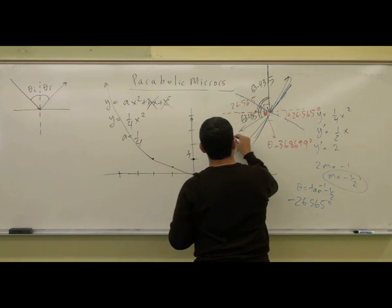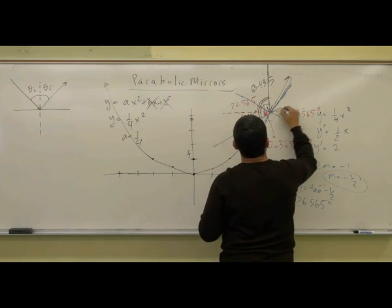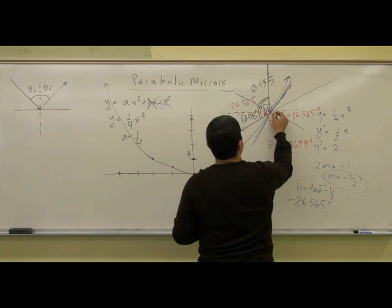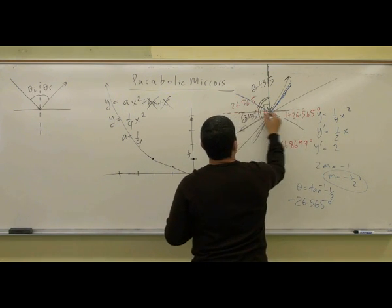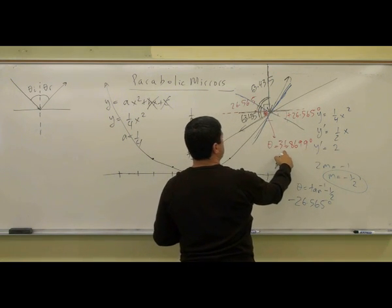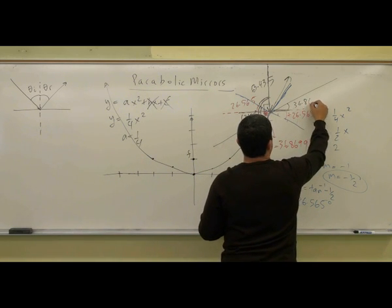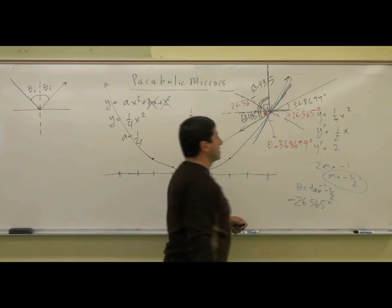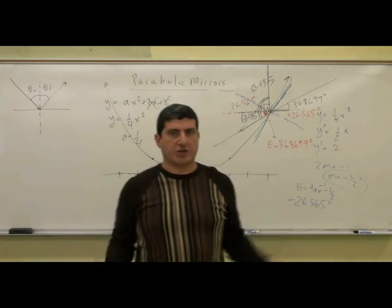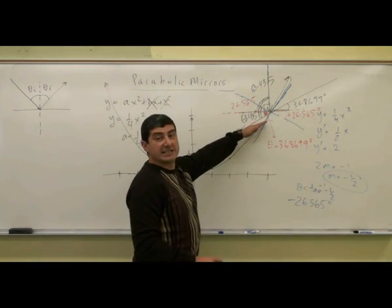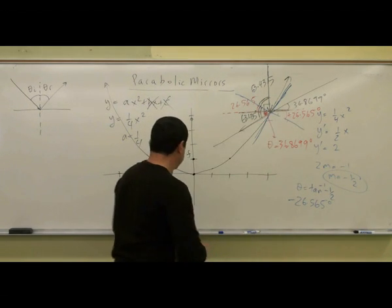Imagine this to be a certain line and we know its angle here is 36.89° and this angle is also 36.8699°. Can I find the equation of that line, the general equation of that line? That is the reflected line from the parabola.